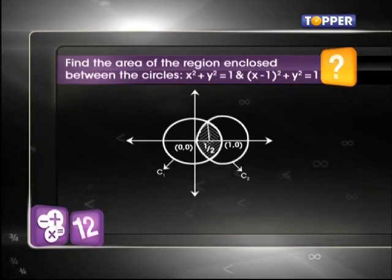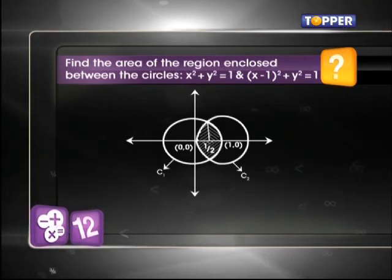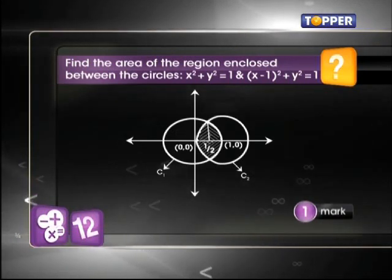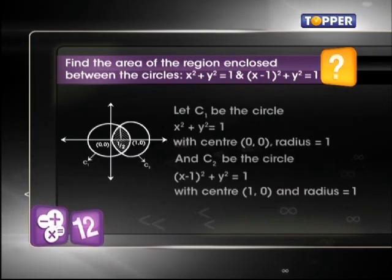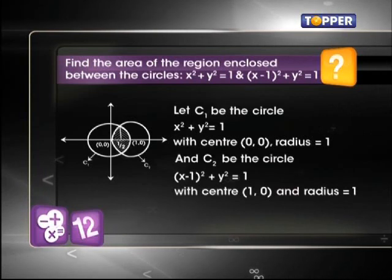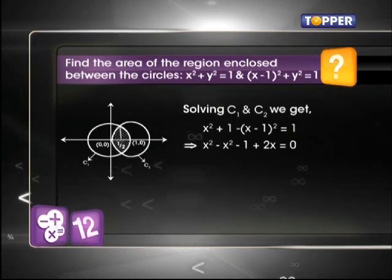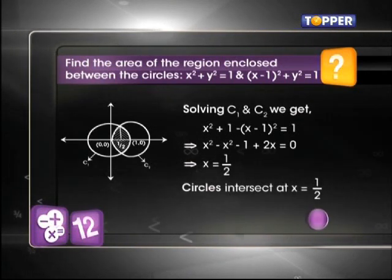Here, the centre of the given circles are (0,0) and (1,0) and radius of both the circles is 1. Now, on solving both the equations of the circles, we find that the circles intersect each other at x = 1/2.